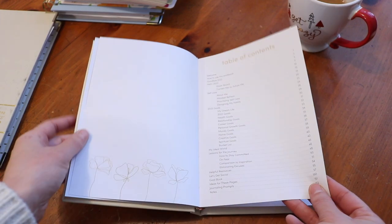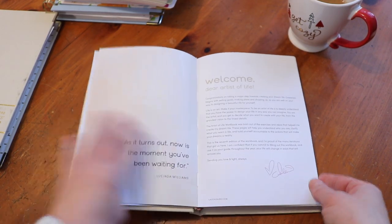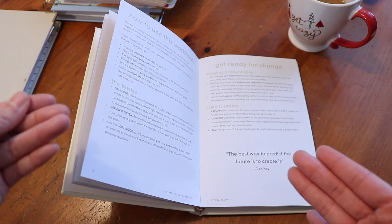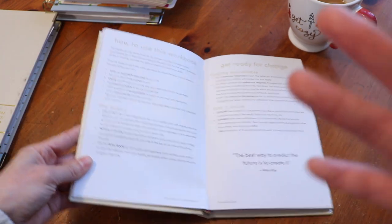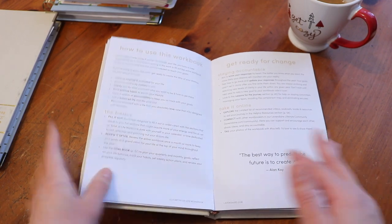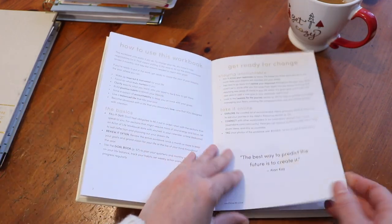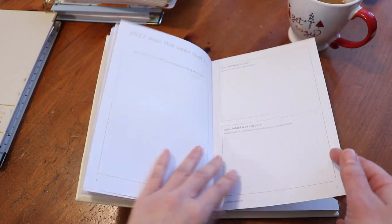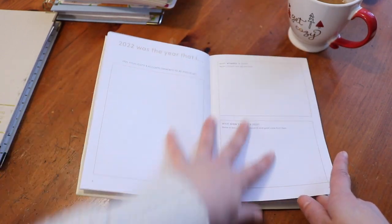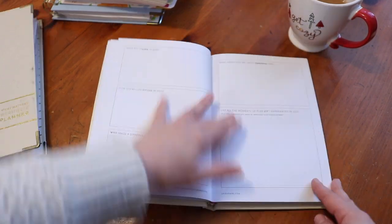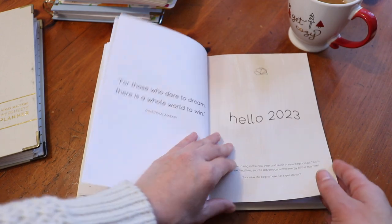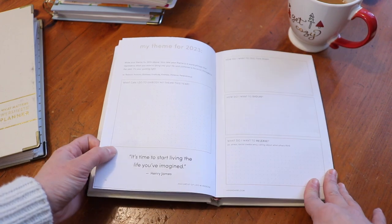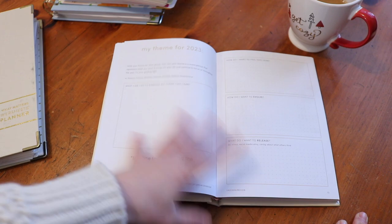This gives you the overview of the table of contents. We have a little welcome page. I'm going to read through all of this when I actually do my planning, because it's an experience. I like to go out to a coffee shop and take my time through it. We have how to use this workbook and quotes, and then we have our review section for the previous year. Now we're moving into pages for 2023, this is the prep work.